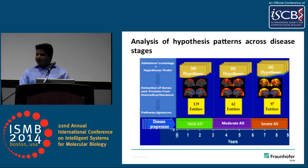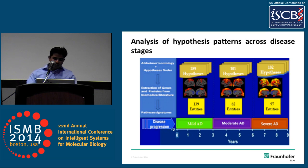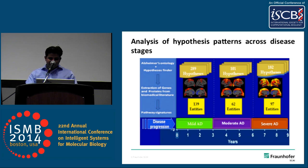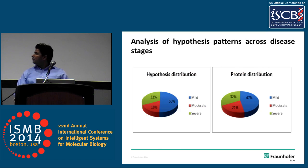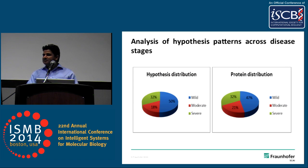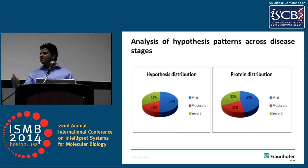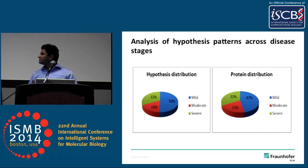So far we get 289 hypotheses belonging to the mild stage of Alzheimer's disease, 101 to the moderate stage, and 182 to the severe stage. About 50% of the hypotheses exist for the mild stage, which tells us that people still don't know how Alzheimer's disease is starting — they are still speculating a lot about the mild stage.